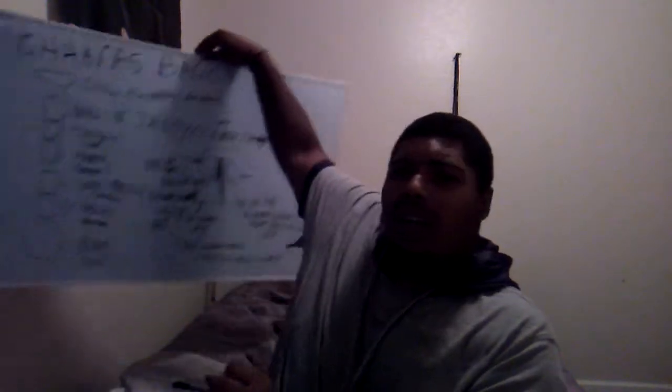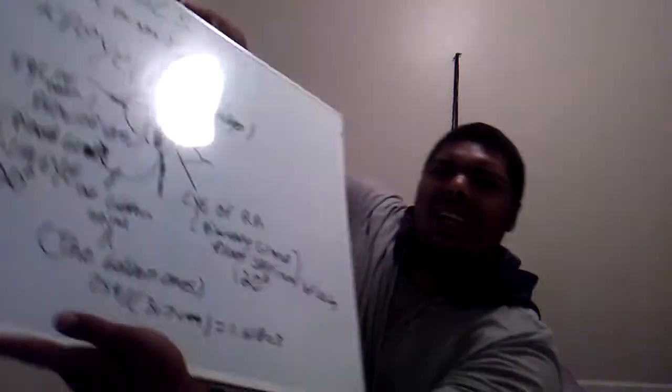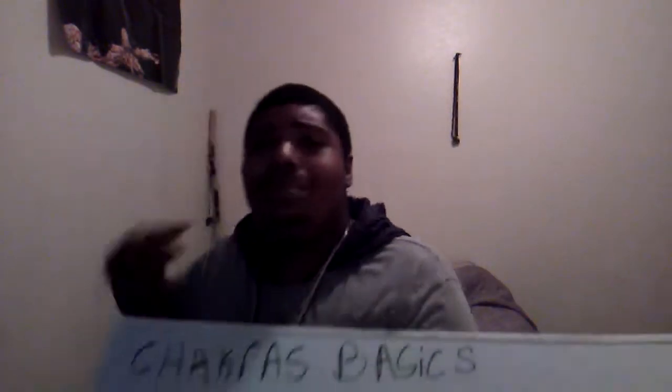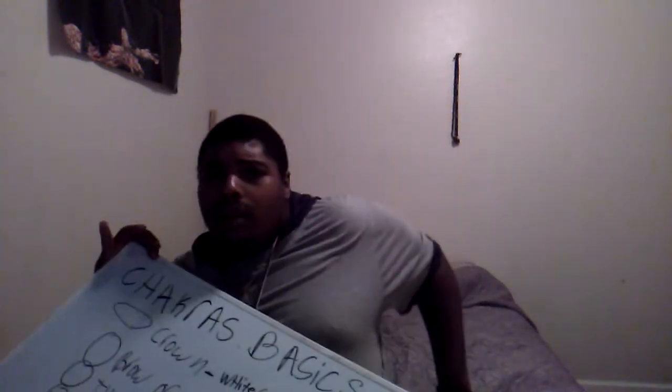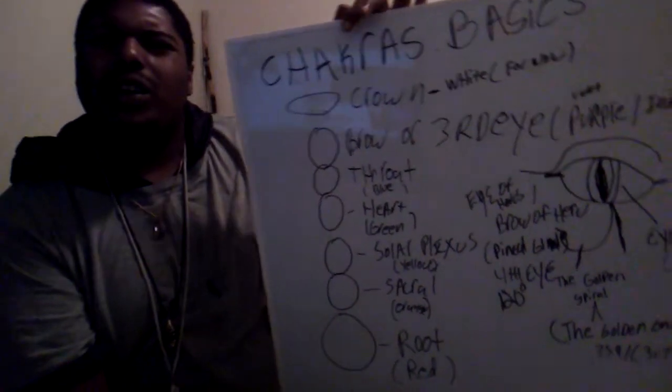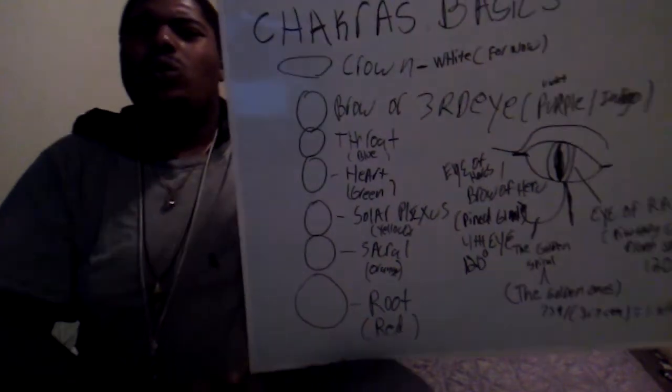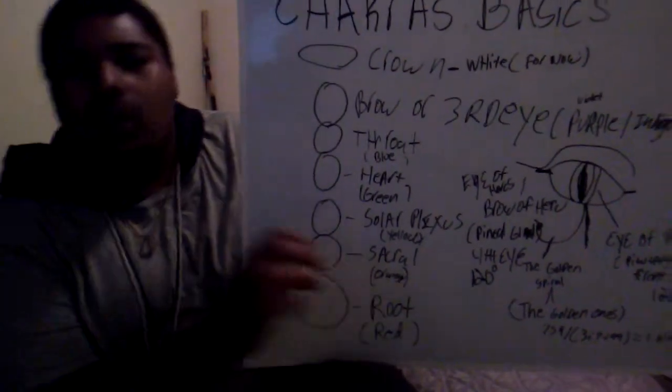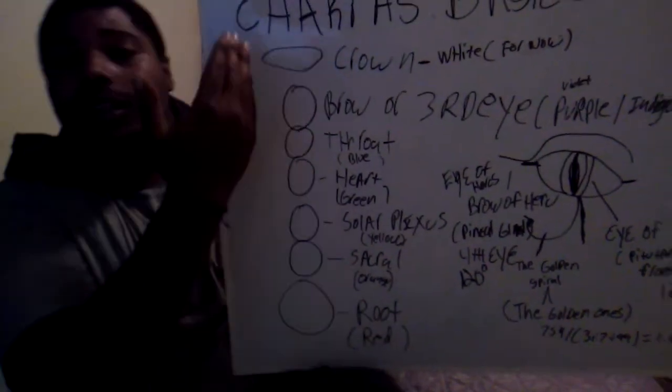Now we've got a little bit of understanding of chakras. I have my diagram here — broke out the whiteboard for you guys. Seven basic chakras — this is basic, guys. I'm going to get way more advanced. So here we go: your red chakra, root chakra, your sacral chakra — color is orange.